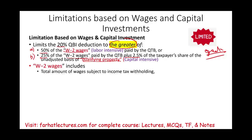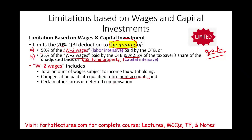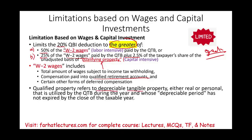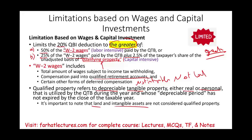W-2 wages means any wages subject to income tax withholding, compensation paid into a qualified retirement plan — even if not taxable — and certain other forms of deferred compensation. Qualifying property refers to depreciable, tangible property — so intangibles are not included, and land is not included. It can be personal property or real property such as buildings or warehouses. They cannot be fully depreciated; they must have an unadjusted basis. Land and intangible assets are not considered qualified property.